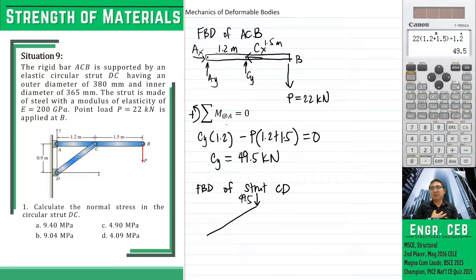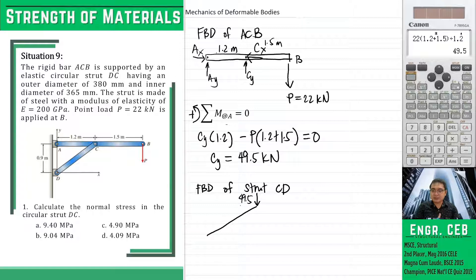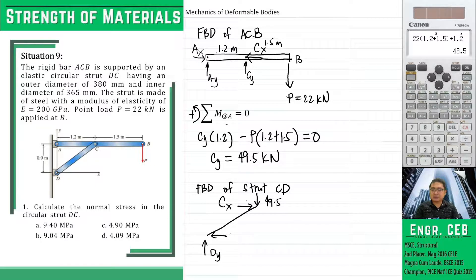Previously, the assumed direction of CX is to the left. When we are analyzing strut CD, it should be to the right. We have a support at D, so therefore, we should write the component of the reaction at that point. We can now solve for CX.